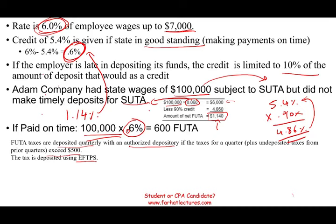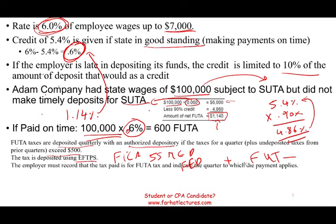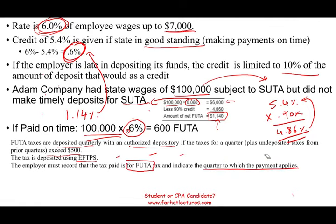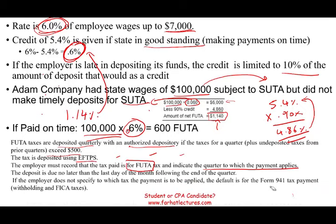EFTPS is a Treasury website where you can make payments for FICA, Social Security, Medicare, and also your FUTA payments. But you have to be very careful: you must specify that you are paying for FUTA and indicate the quarter to which the payment applies. Otherwise, they will take your money and assume it's for your Form 941 for FICA.